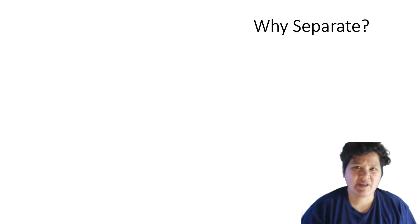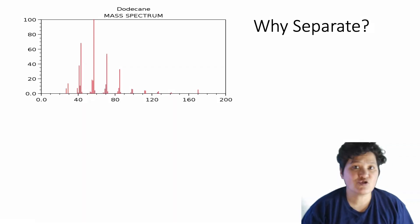So why would you want to do that? The answer is that many detection methods, like mass spectroscopy, might not be able to analyze all of the analytes in the mixture. Because for many methods, peaks of different analytes may overlap. For example, look at these two mass spectra here.